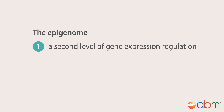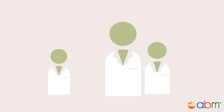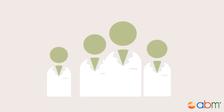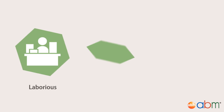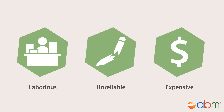The epigenome acts as a second level of gene expression regulation, which is heritable but also reversible. For years, researchers have been attempting to introduce specific epigenetic modifications in an effort to adjust gene expression levels, which could have enormous therapeutic potential. But their methods were laborious, unreliable, and expensive.